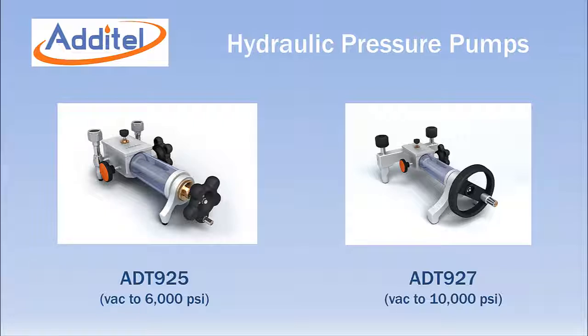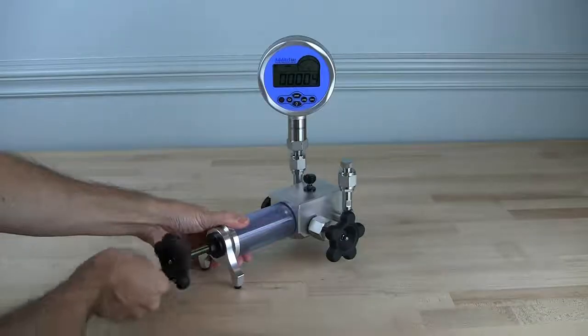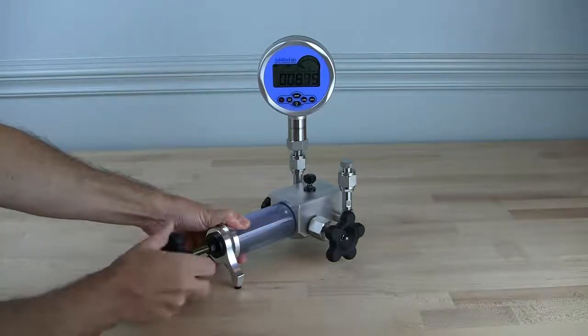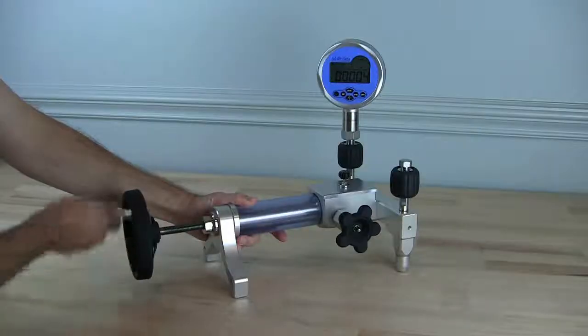The Additel ADT925 and 927 are compact portable hydraulic pressure pumps with a maximum range of 6,000 PSI and 10,000 PSI respectively.